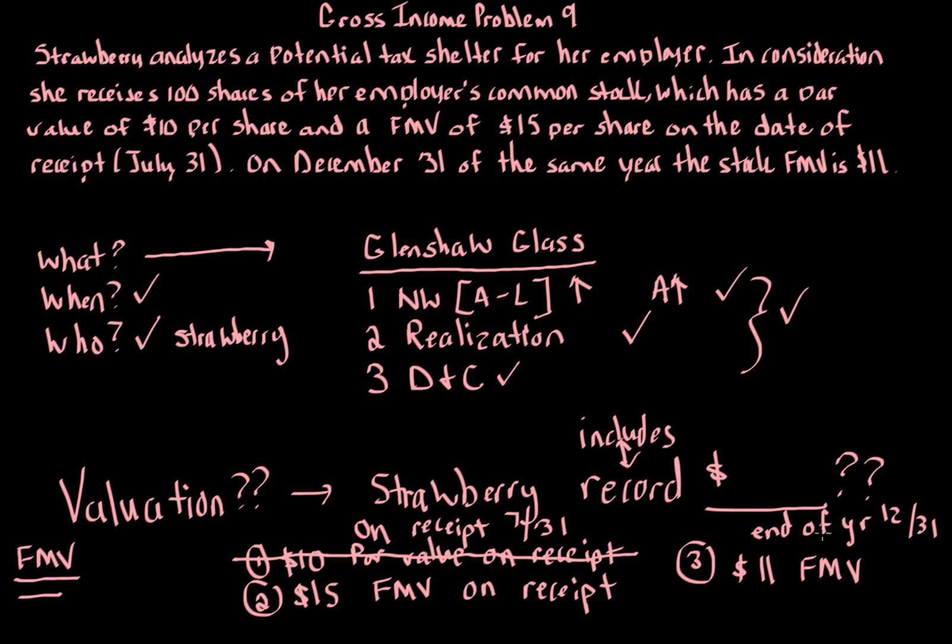You might be thinking, doesn't end of the year make more sense because it's closer to when we file the tax return? That does not matter. Under the regs, we look at the date of receipt. So that means we eliminate the fair market value at the end of the year, and we use the $15 fair market value on receipt.